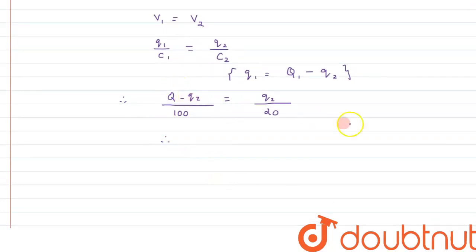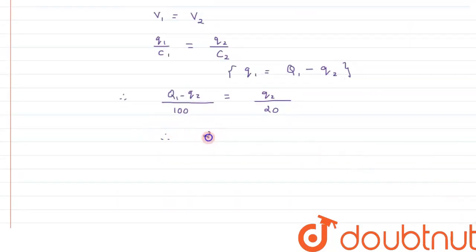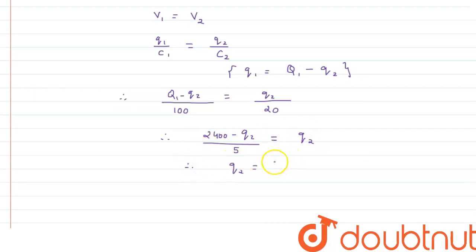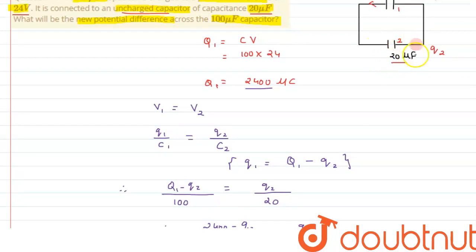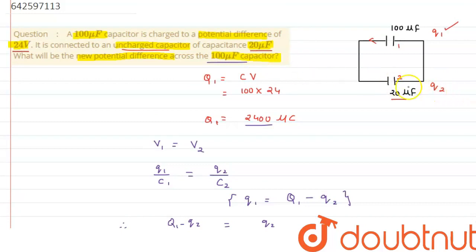Substituting the total charge of 2400 microcoulombs, we get (2400 − Q2) divided by 5 equals Q2. Solving this equation, the value of Q2 comes out to be 400 microcoulombs. This is the charge that will be accumulated on capacitor two.